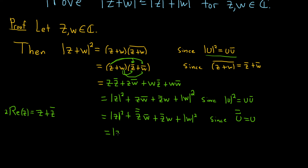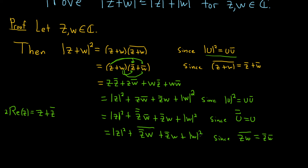Now we can use another property: the conjugate distributes over multiplication. So we can write the z-double-conjugate times w-conjugate term as the conjugate of the quantity z-conjugate times w. And then plus z-conjugate times w, plus the modulus of w squared. This is since the conjugate of a product is the product of the conjugates. The addition is also commutative, so this matches the formula we want.